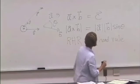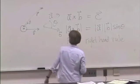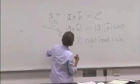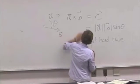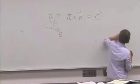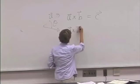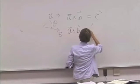However, there's another way to evaluate it numerically, and it looks like this. So, A cross B is the following vector.